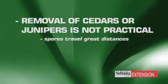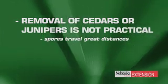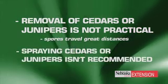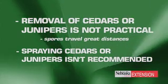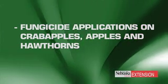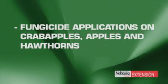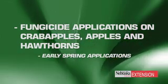Again, the time to control that is right now. We have some different management options. Sometimes people talk about removal of junipers or cedars from the landscape, but this really isn't all that practical. These spores can travel for quite a distance — several hundred yards to even several miles has been reported. It's also not practical to spray the junipers or cedars to reduce spore production. Mostly we're going to be looking at fungicide applications on the crab apples, apples, hawthorns, and other plants in the rose family that are susceptible, spraying when spores are being produced during cool, moist weather in the spring.